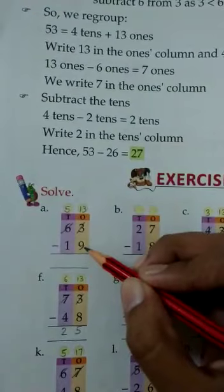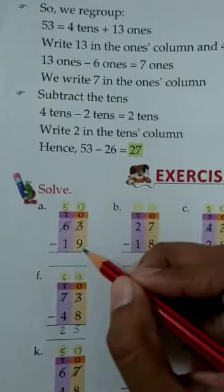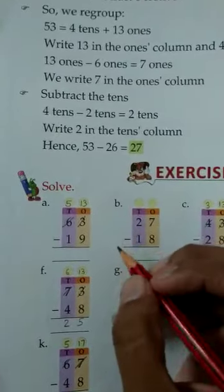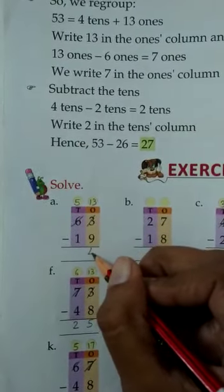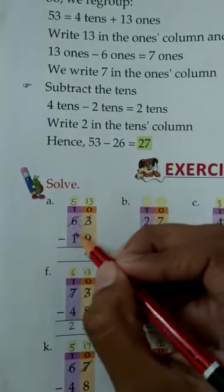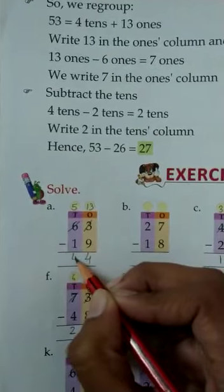So now we will be subtracting 9 from 13 and 1 from 5. So when we subtract 9 from 13, your answer is 4. And we will subtract 1 from 5, your answer will be 4.